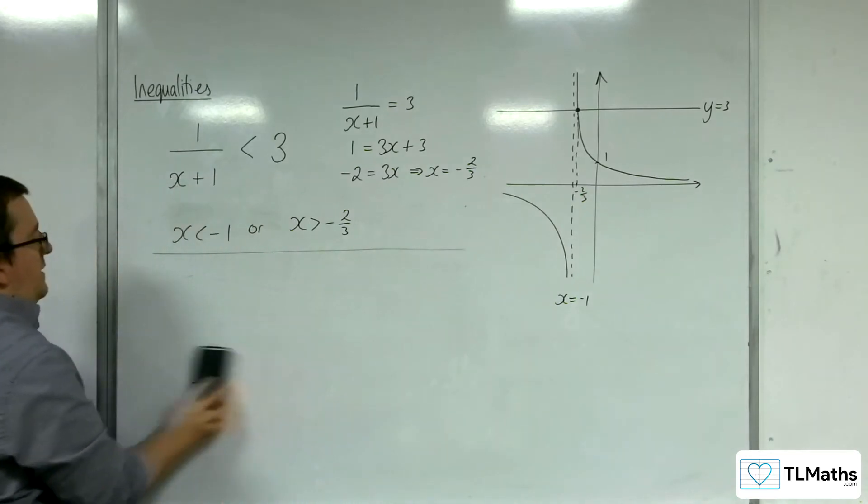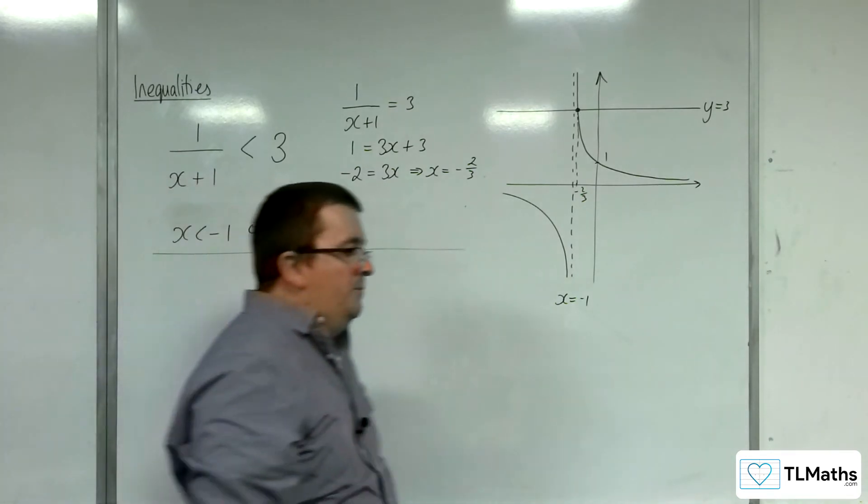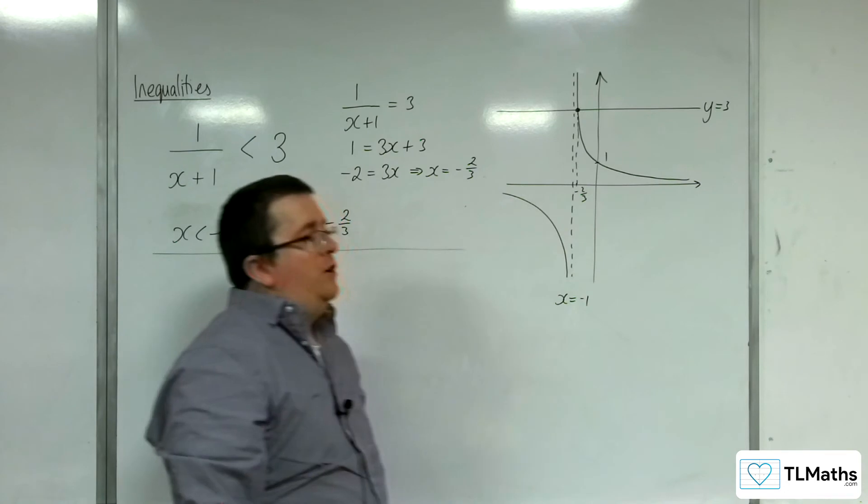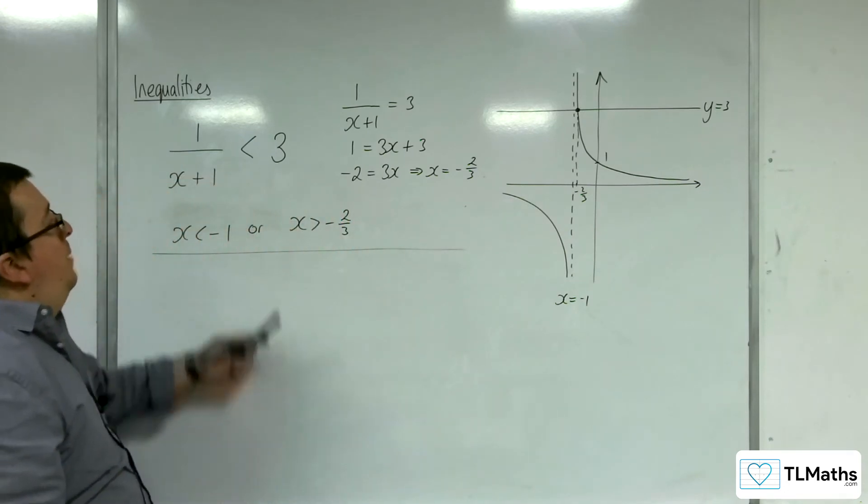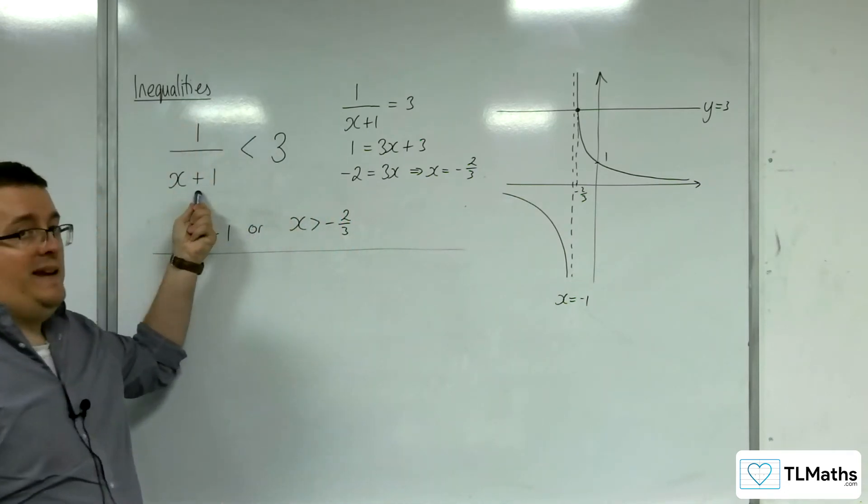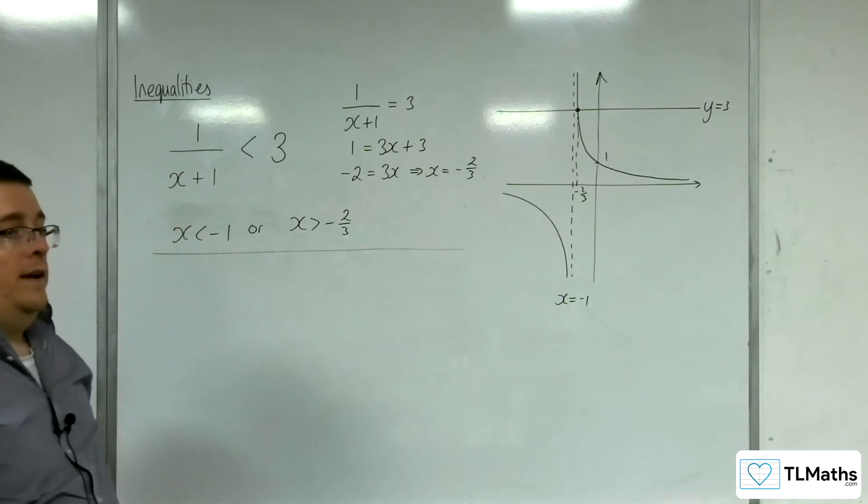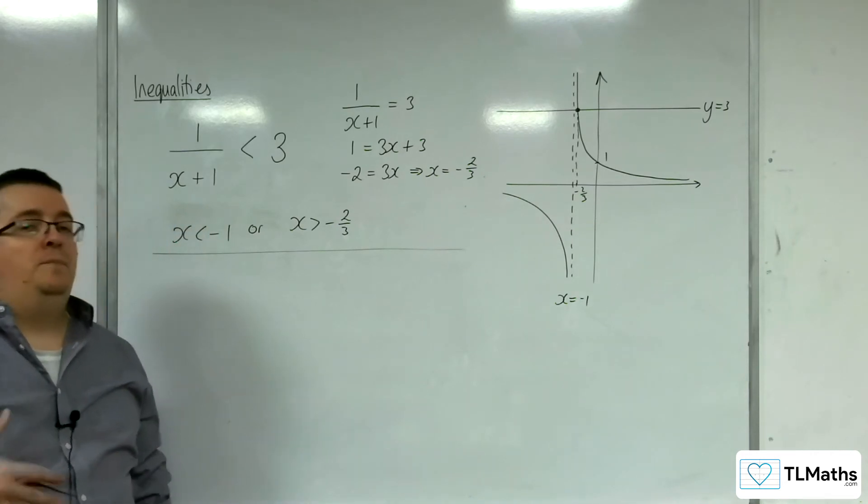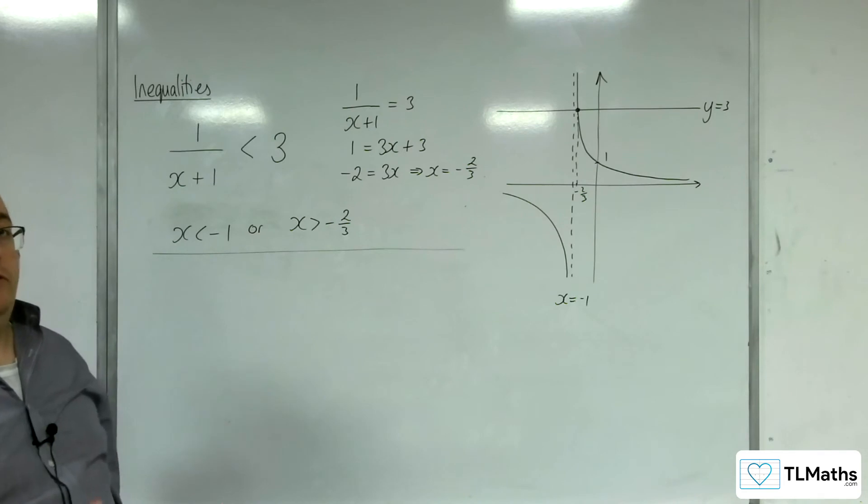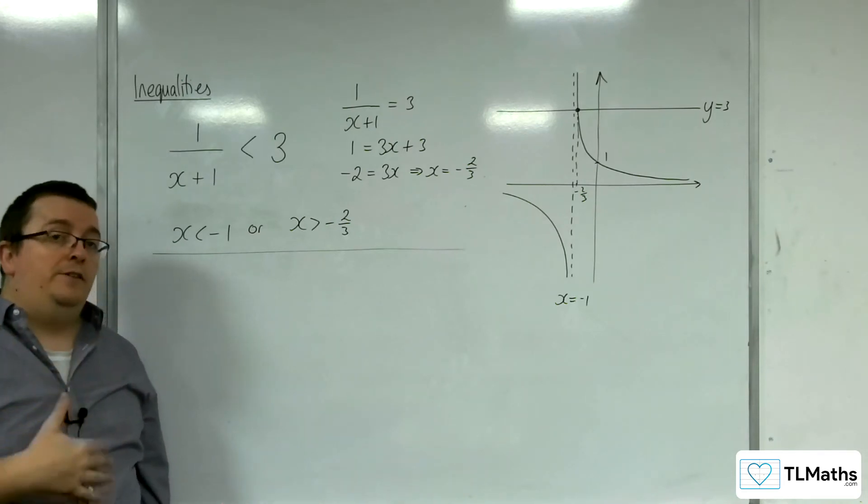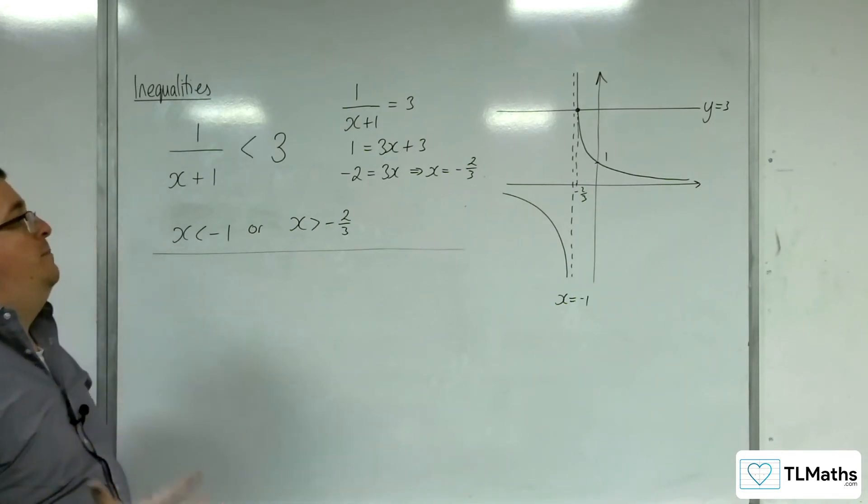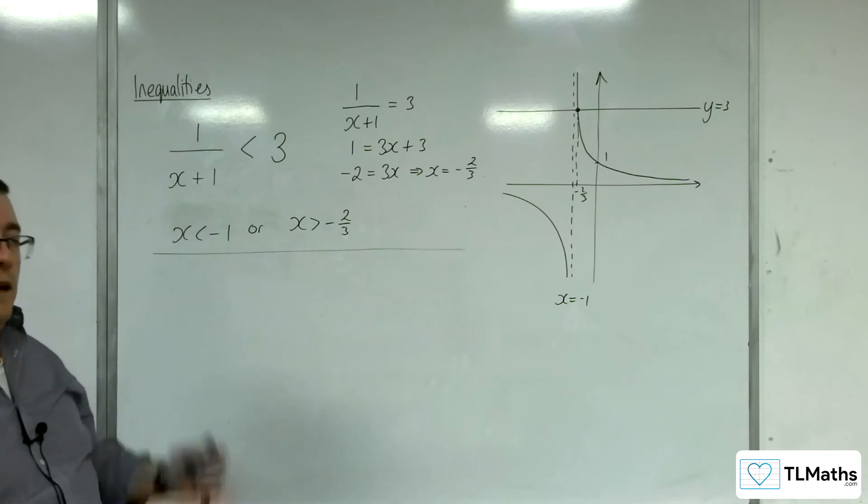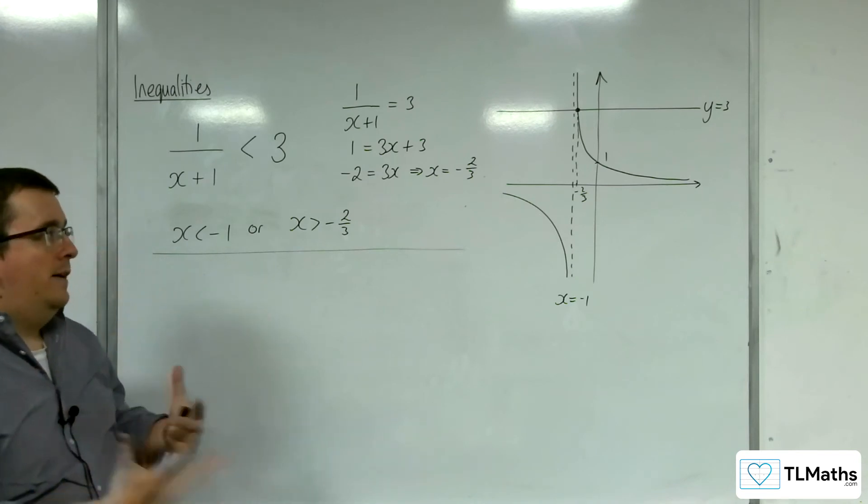Why is that the case? The reason why is because you're multiplying by something that could be negative. The x plus 1 could be positive, or it could be negative. If it's negative, you're multiplying both sides of an inequality by a negative value, in which case the inequality symbol will flip around. And so, that is where the problem lies.